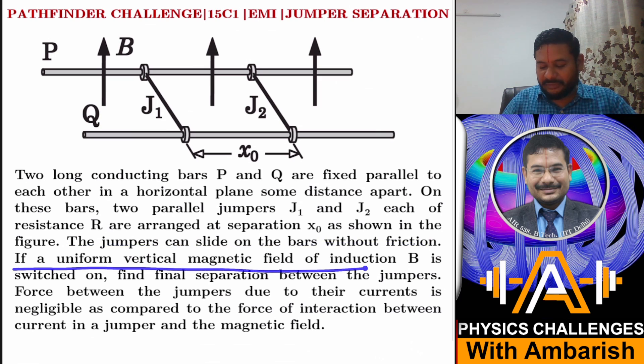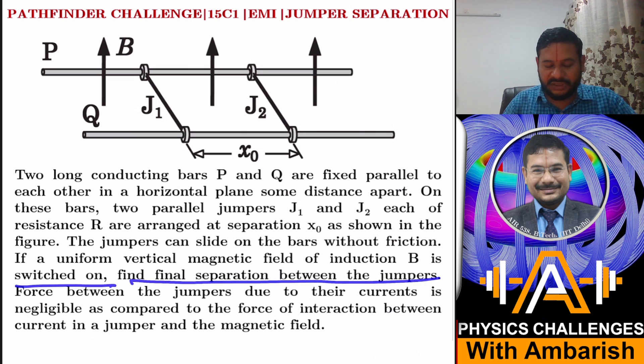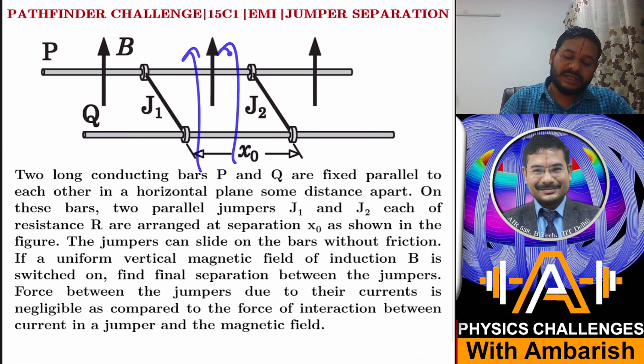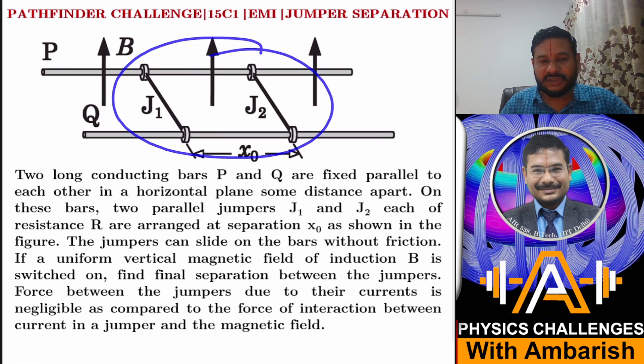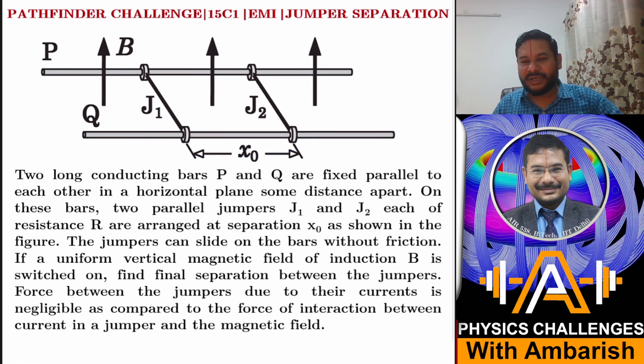If a uniform vertical magnetic field of induction B is switched on, find the final separation between the jumpers. We suddenly switch on a field B and have to find out the final separation between the two jumpers.